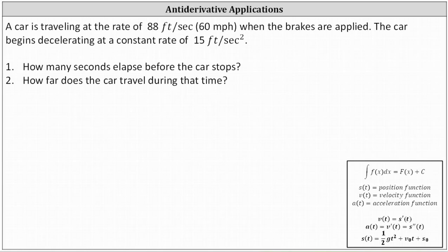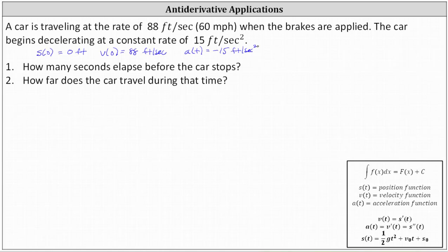For this problem, we'll let s of t equal the position function, v of t equal the velocity function, and a of t equal the acceleration function. Let's begin by listing out all the given information. The initial position is zero, so s of zero equals zero feet. Because the car is traveling at a rate of 88 feet per second, the initial velocity v of zero equals 88 feet per second. And because the car begins decelerating at a constant rate of 15 feet per second squared, the acceleration function a of t equals negative 15 feet per second squared. Notice the acceleration is negative because the car is decelerating, not accelerating.